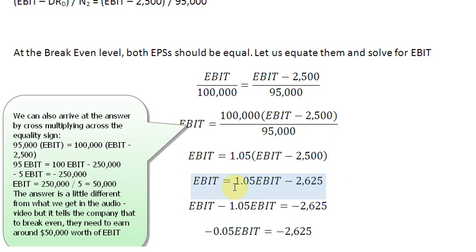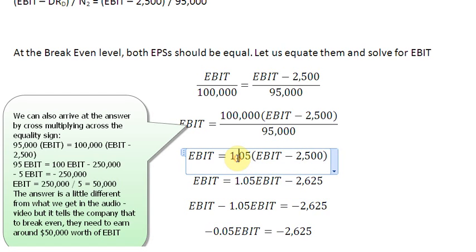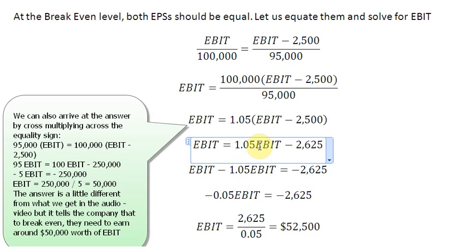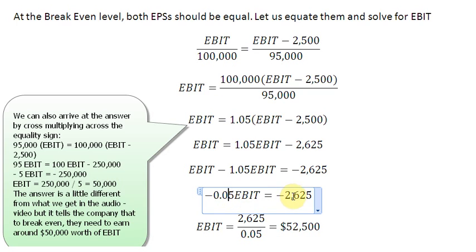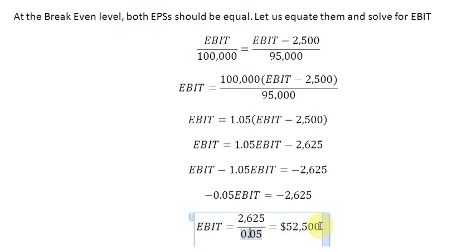After transposition, we bring 1.05 EBIT to the left-hand side: EBIT minus 1.05 EBIT equals minus 2,625, giving minus 0.05 EBIT equals minus 2,625. Therefore, EBIT equals 2,625 divided by 0.05, which is $52,500. This is our break-even level of EBIT.